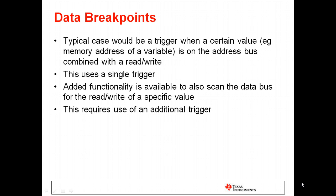A data breakpoint is where you're looking at values being transferred between addresses. For example, when the memory address of a variable is sent along combined with the read-write instruction, so there's activity with that variable. You can take it one step further — which requires a second trigger — and look for a specific value after finding that activity. For example, you saw a read-write to the variable 'test', and then you can say: I want a breakpoint when the value 4 is being written to the variable 'test'.